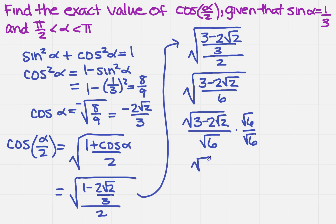And when I do that, I get the square root of 6 times the square root of 3 minus 2 square root of 2, that's a hot mess, divided by 6.